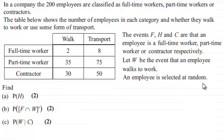An employee is selected at random and we've got to find the probability of H for two marks, the probability of not F intersected with W for two marks, and finally the probability of W given C for two marks.